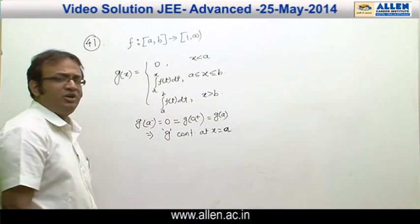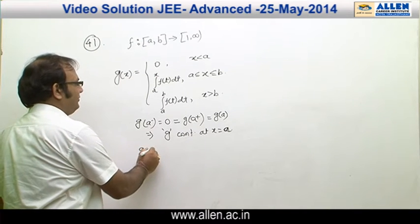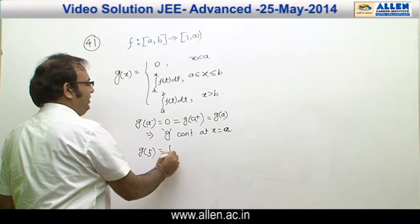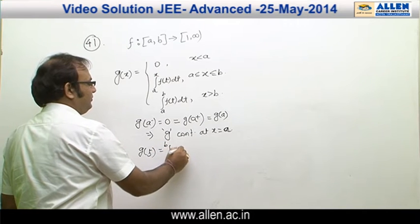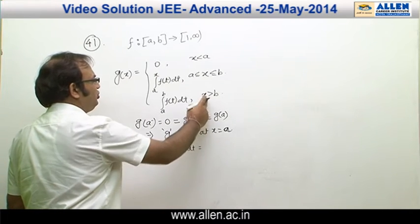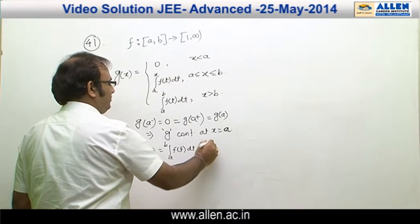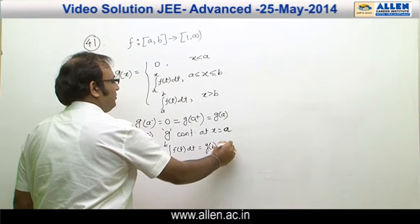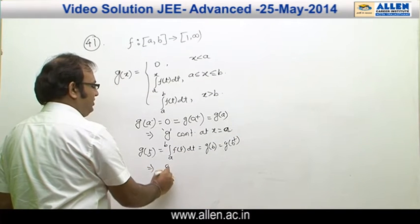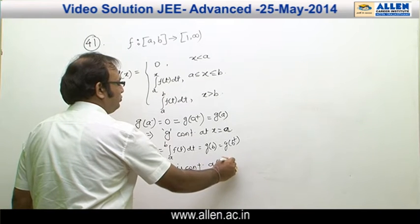Similarly, we check continuity at x = b. We find that g(b⁻) equals the integral from a to b of f(t) dt, which is also equal to g(b⁺) and g(b), since equality is given. This implies that g is continuous at x = b as well.